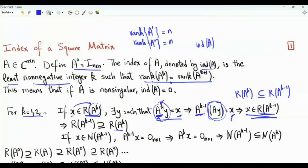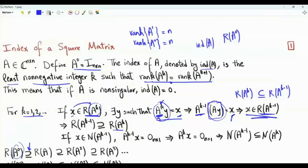We can think of the column space, or range, of the matrix as shrinking. The range of A to the power 0, which is the range of the identity, is basically the n-dimensional space. This contains the range of A to the power 1, which contains the range of A squared, which contains the range of A to the power 3, and so forth. The range is the same or is shrinking as we raise the matrix to higher powers.